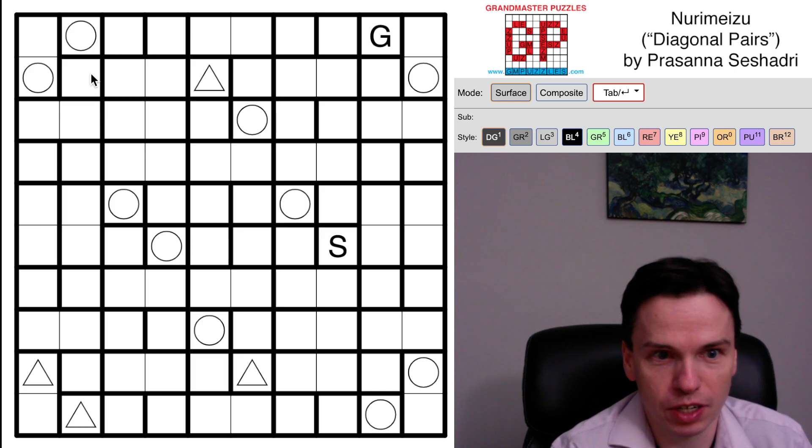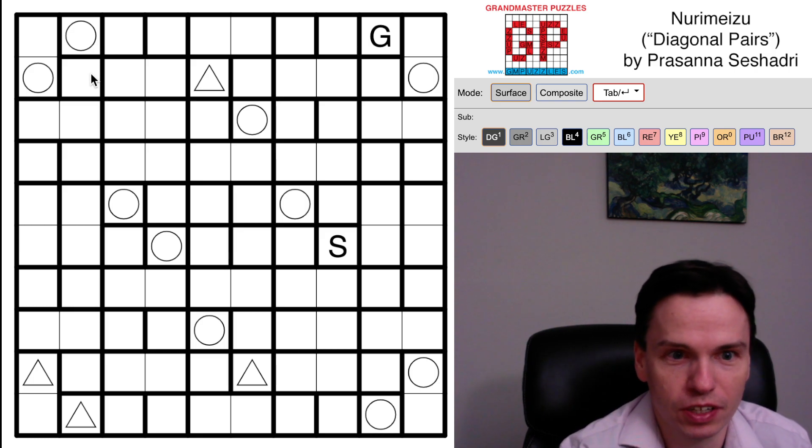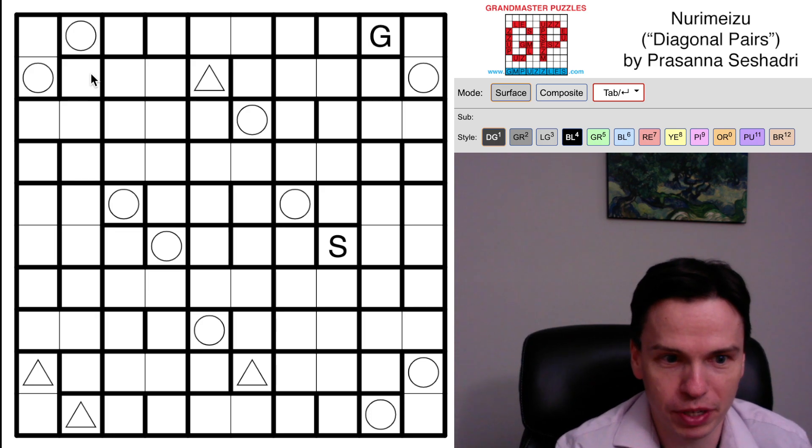The Nuri probably coming from Nurakabe, inspired by that sense of a connected stream, no 2x2 cells. In this puzzle, actually both the shaded and unshaded don't form 2x2 groups. And Mesu, the other half of the name, coming from the word maze, an English word, but it's going to be a path puzzle.